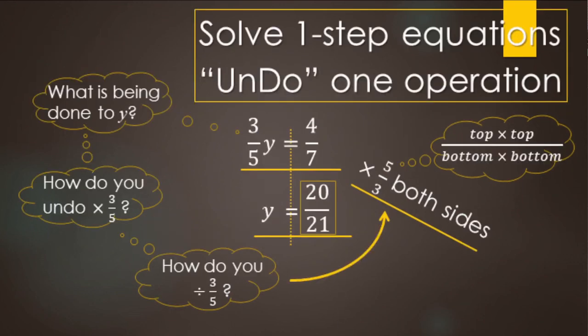To undo one operation, just think: what's being done to the variable and how can I undo that? It's fairly straightforward with these one-step equations, but sometimes undoing the operation takes several steps. Just keep your thoughts straight — what's being done to my variable, and how do I undo it?